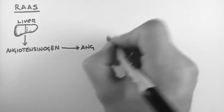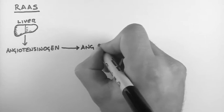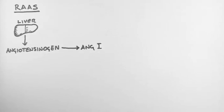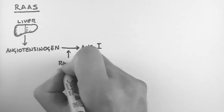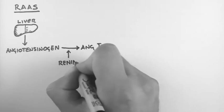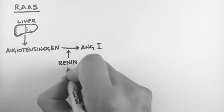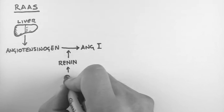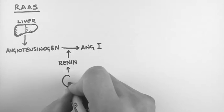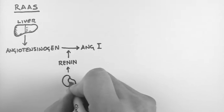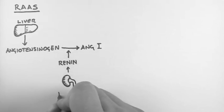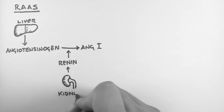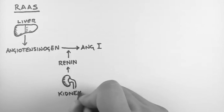Angiotensinogen gets converted into angiotensin 1, and this occurs through the action of renin, which is an enzyme released from the kidney. The kidney releases renin due to low fluid volume moving through the nephrons.